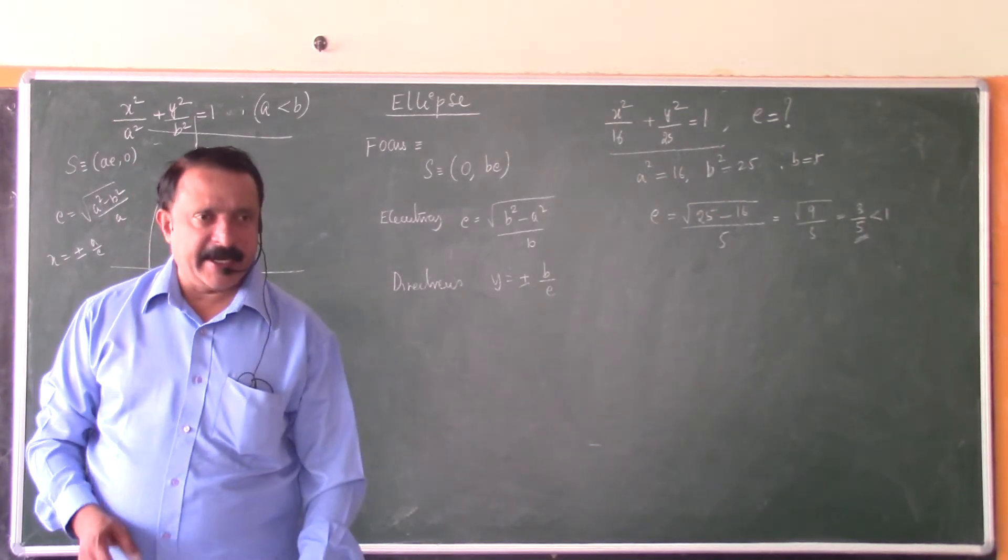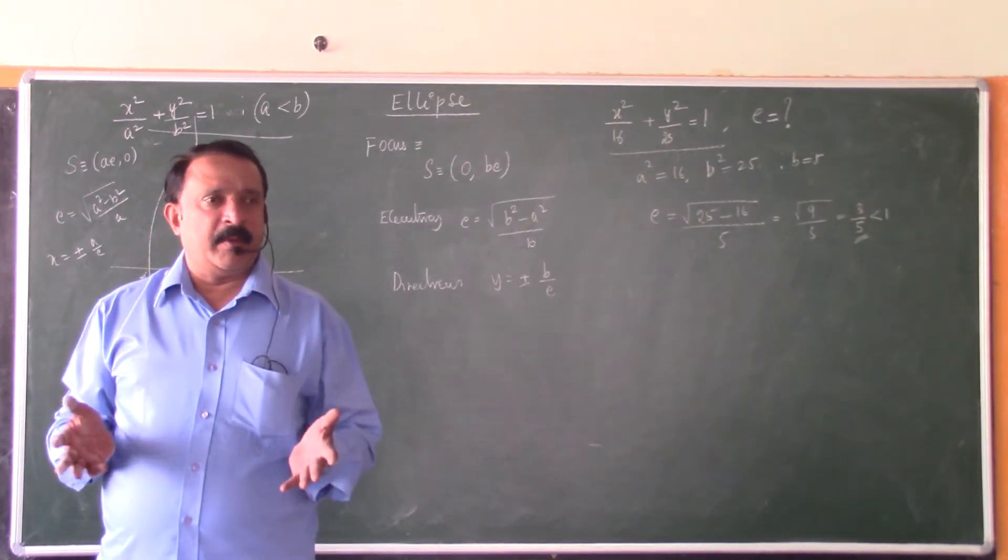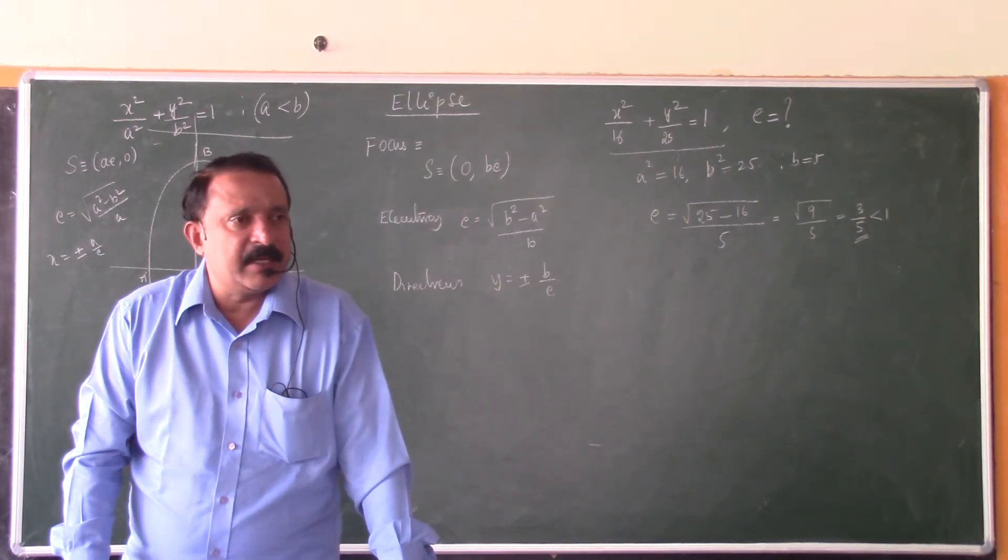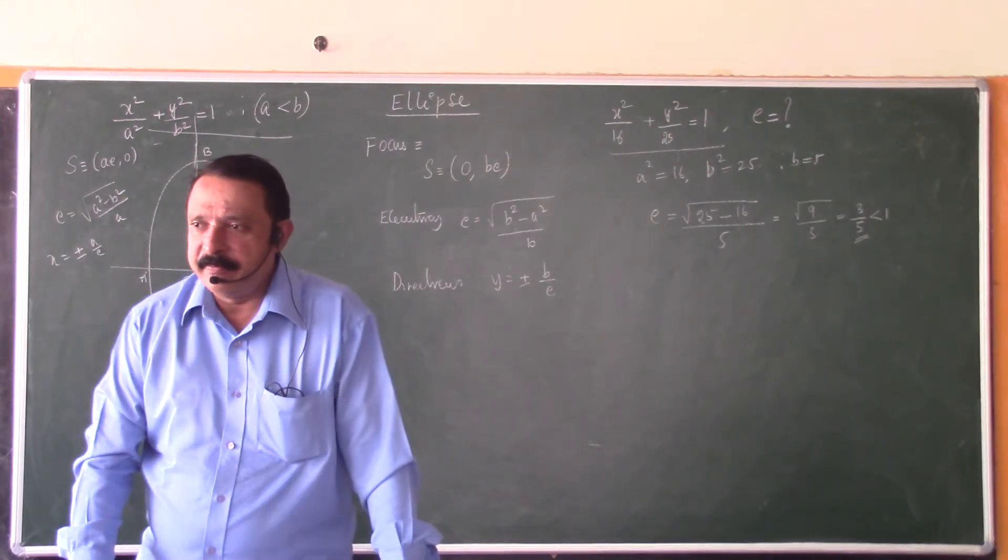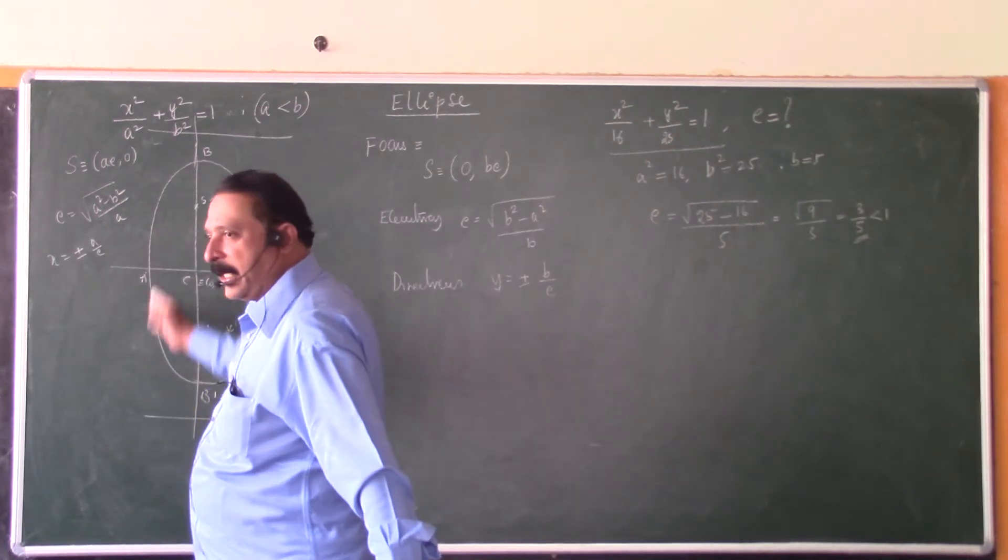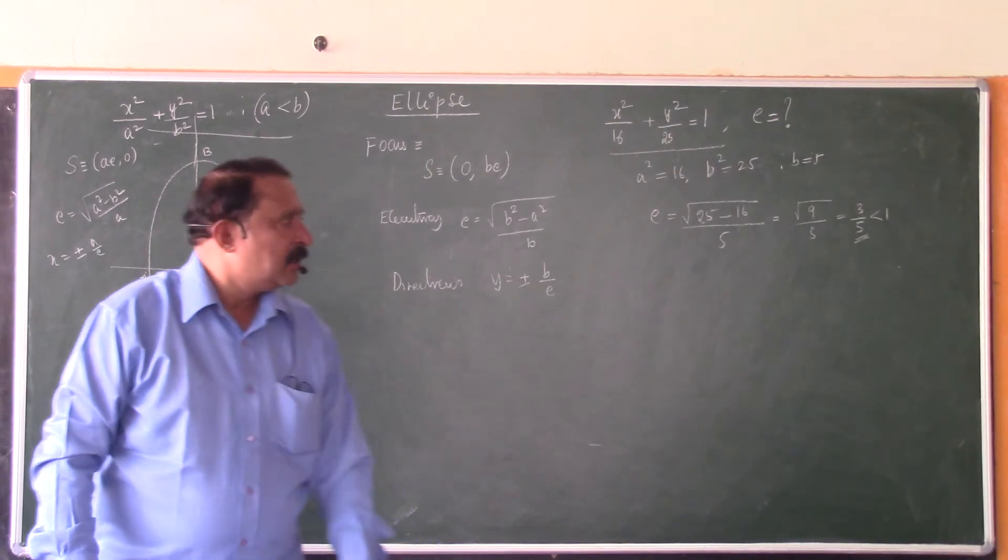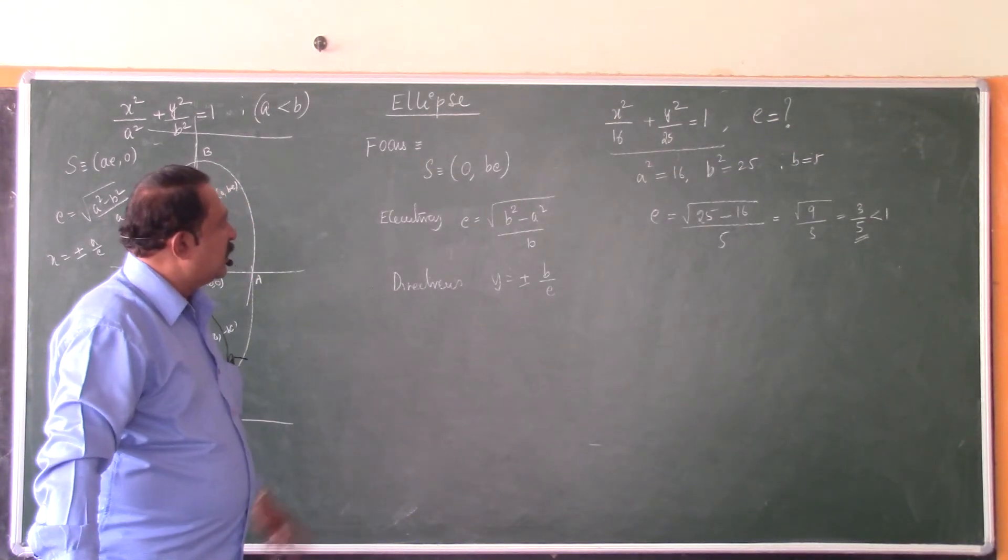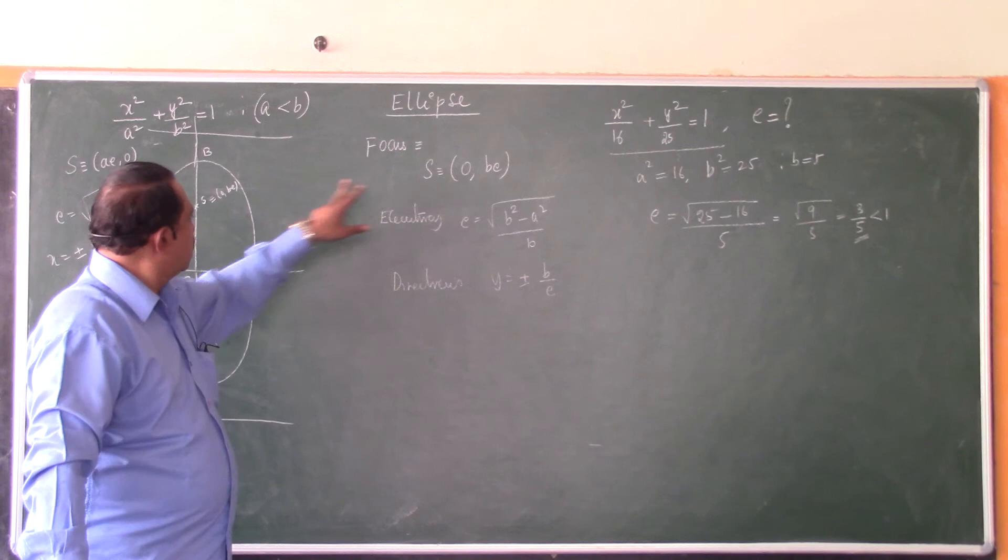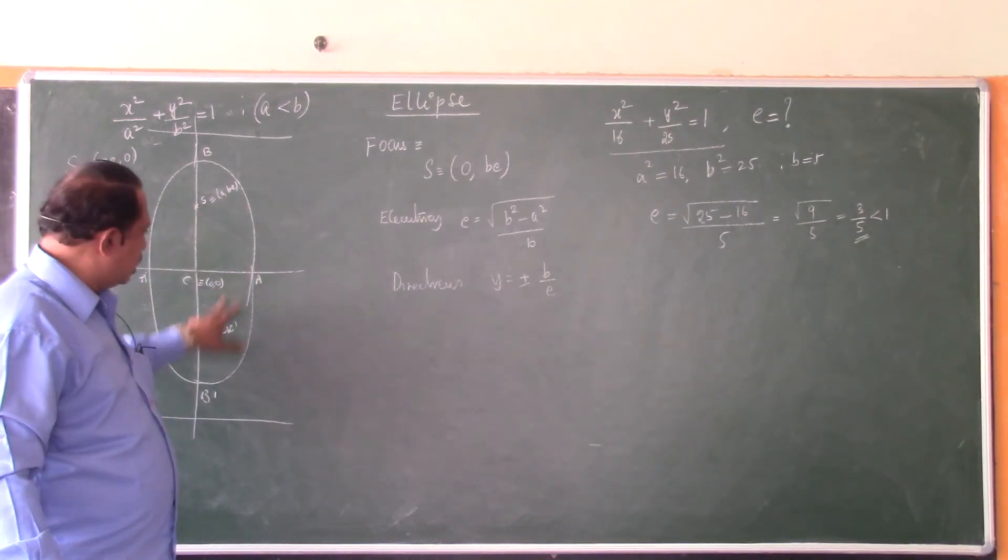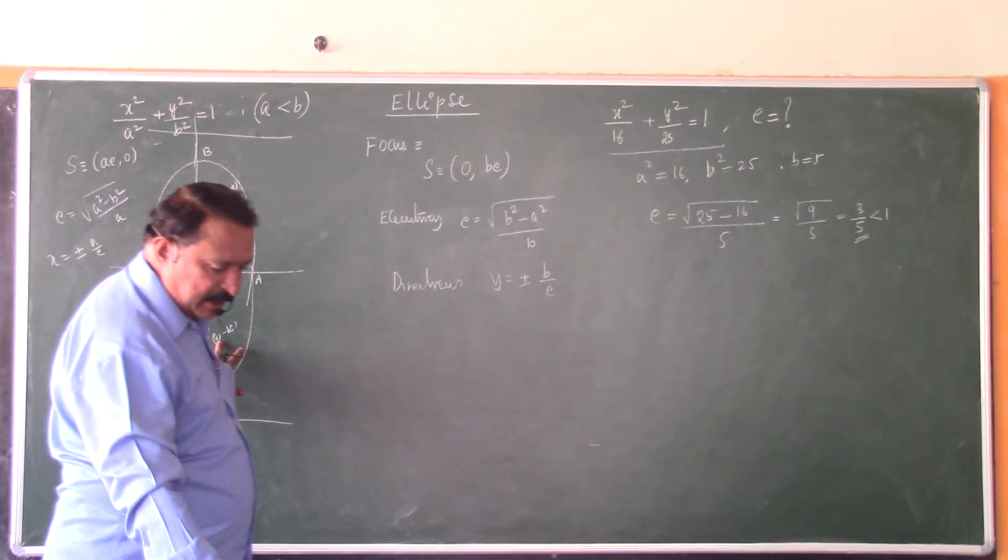Just three details you need to remember. As far as the ellipse x² by a² plus y² by b² equals 1, a is less than b. The ellipse comes vertical. The foci will be located on y-axis. And the coordinates of the foci, s equals 0, be and 0, minus be. I can write s equals 0, plus or minus be.